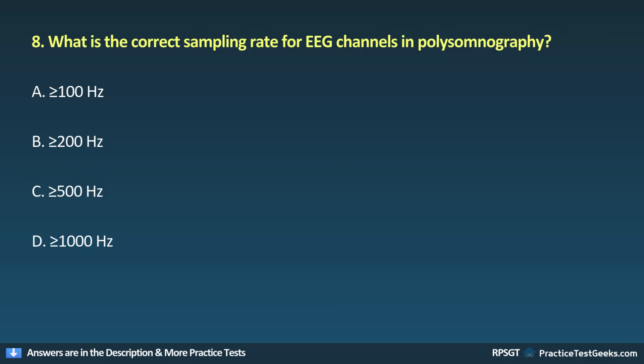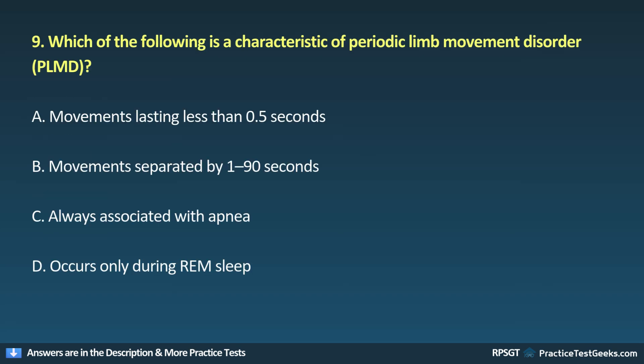Question 8: What is the correct sampling rate for EEG channels in polysomnography? A. Greater than 100 Hz, B. Greater than 200 Hz, C. Greater than or equal to 500 Hz, D. Greater than or equal to 1000 Hz.